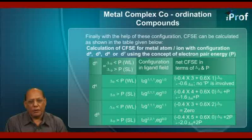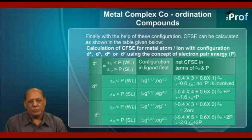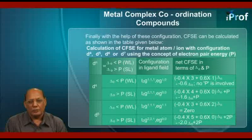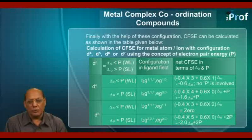Similarly, for D5, in the first case with delta O less than P and weak ligands, the configuration becomes D2G111, EG111, and CFSE comes out to be 0. But in the second case, if delta O is more than P, that is for strong ligands, the configuration becomes D2G221, EG00. And CFSE will be calculated as minus 0.4 into 5 plus 0.6 into 0 times delta O plus 2P, because there are two pairs of electrons formed. This comes out to be equal to minus 2.0 delta O plus 2P.